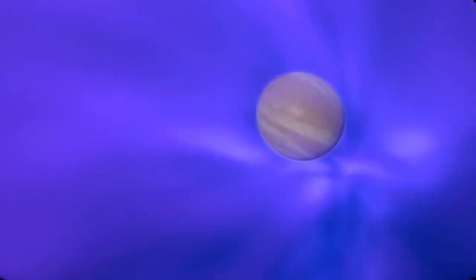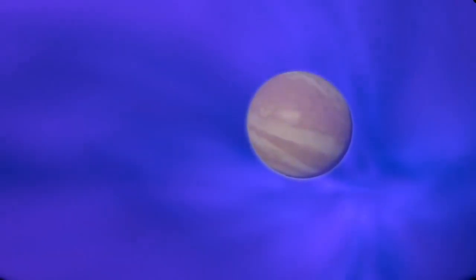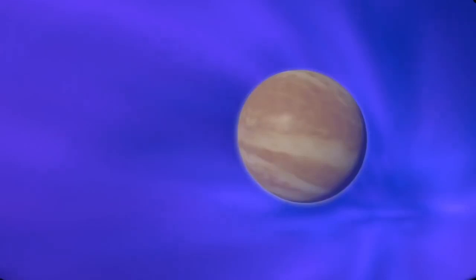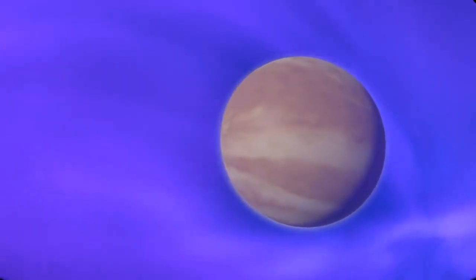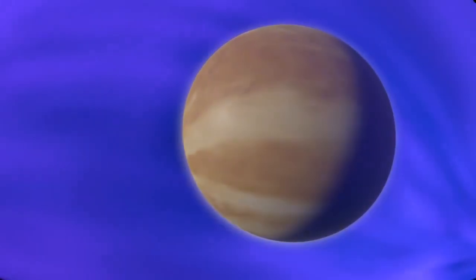Venus is the size of Earth, but rotates so slowly that no dynamo could form in its core. The solar wind bombards its atmosphere directly.